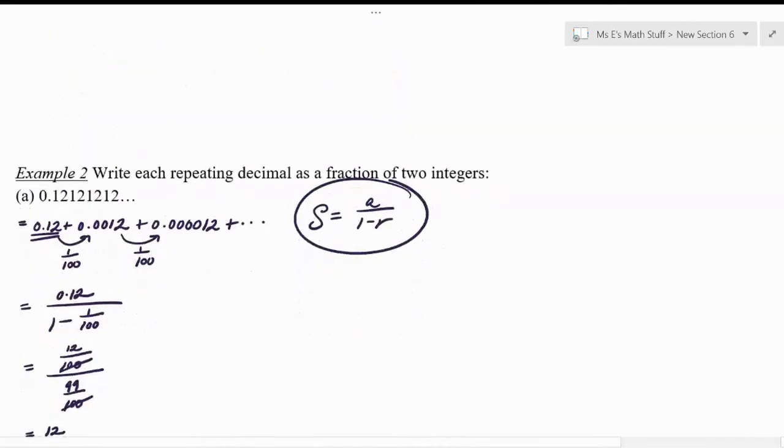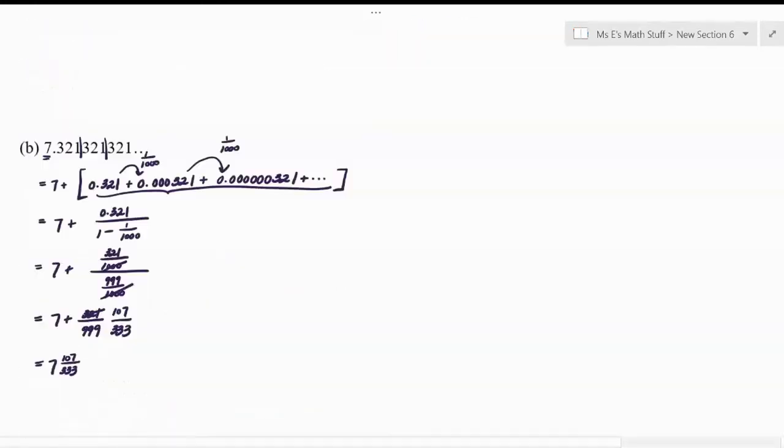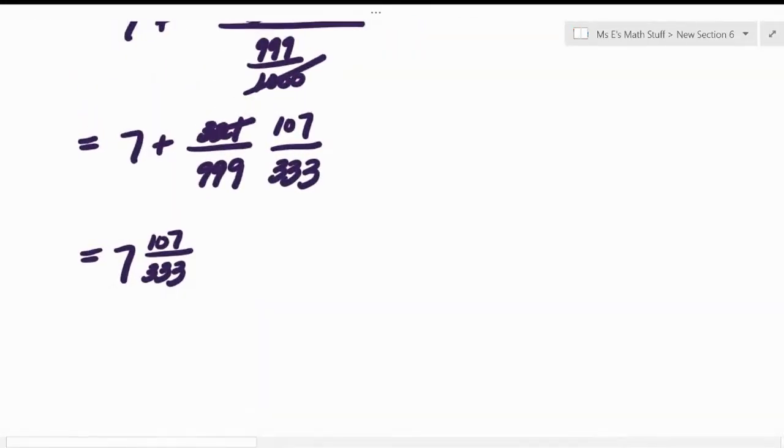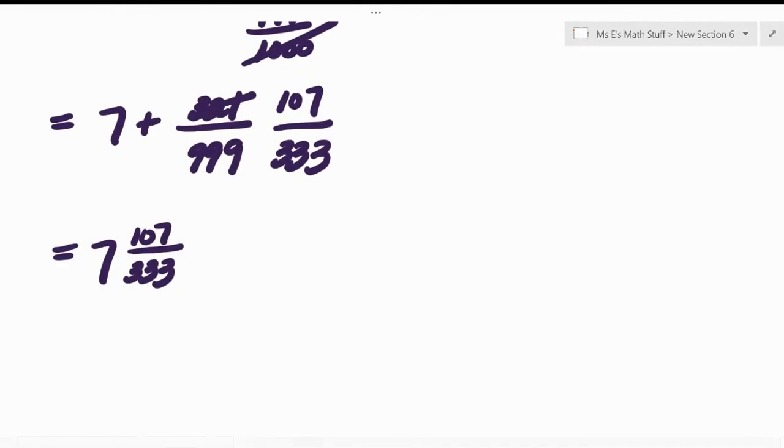That means that we'd have to write it in improper fraction form. So I'm multiplying 7 times 333, and then I'm going to add 107.